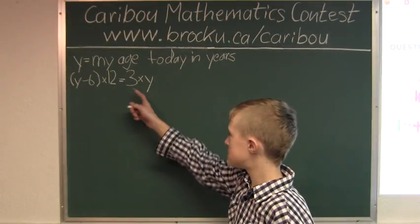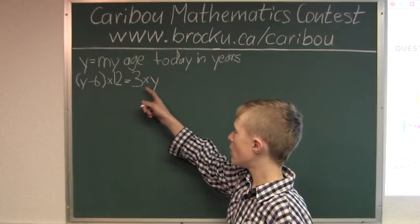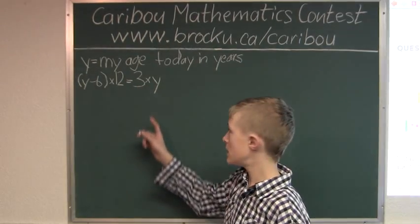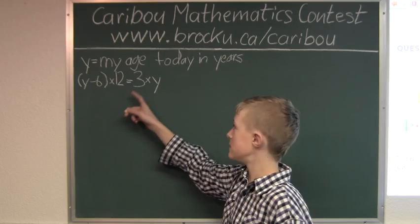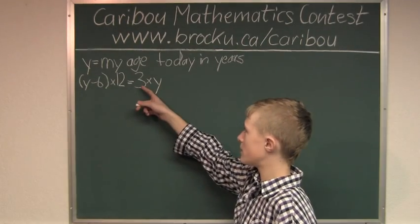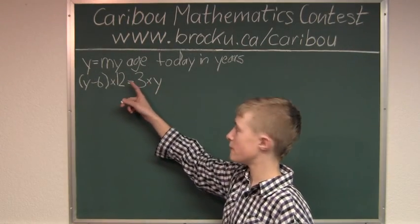Is three times my age today in years. So, we can already see that we can cancel out one factor of three on both sides in the 12 and the 3. So, what we would have left is a 4 and a 1.